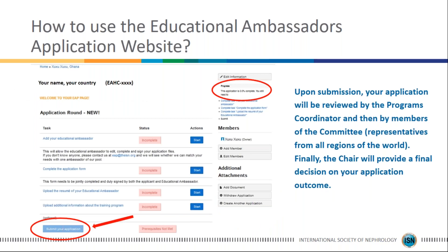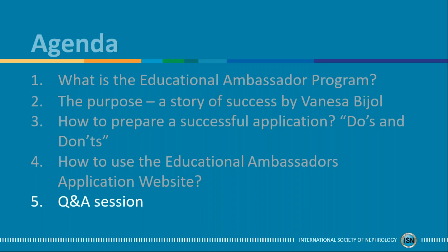Once you complete all the steps, you will see the progress bar at 100%, and the Submit Application button will become available — it is only available once all steps are completed. Once you submit, your application will be reviewed by the programs coordinator, then by the members of the committee who are representatives from all regions of the world, and finally the chair will provide a final decision on your application outcome. If you encounter any technical problems or have any questions, please get in touch with us at eap.theisn.org. We are always here for your support.